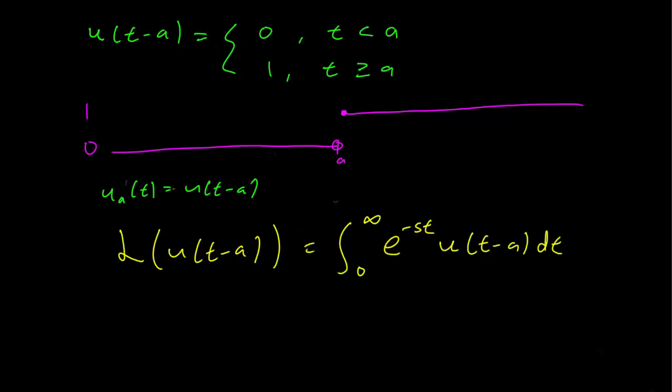So recall what u(t-a) means. It means a function that is 0 when t is less than a and it's 1 when t is greater than a.